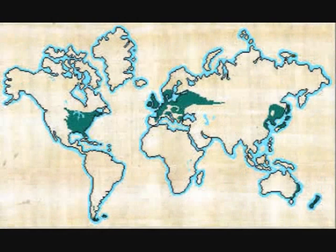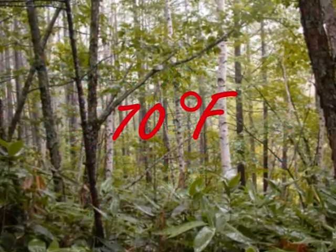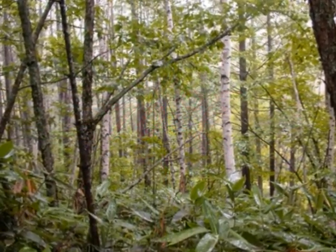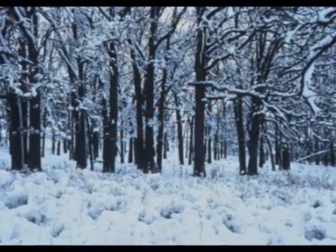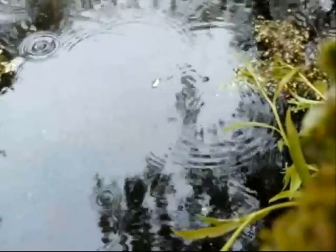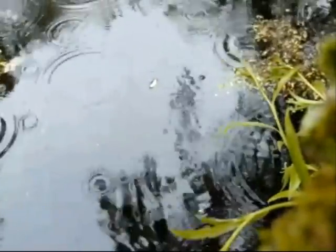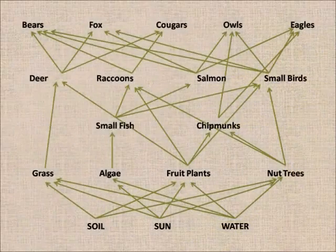The climate is defined by location, temperature, and precipitation. The temperate deciduous forest can be found in the shaded regions on the map shown. The average temperature in the summer is 70 degrees Fahrenheit and 30 degrees Fahrenheit in the winter. Each year, about 32 inches of water precipitates as rain or snow.